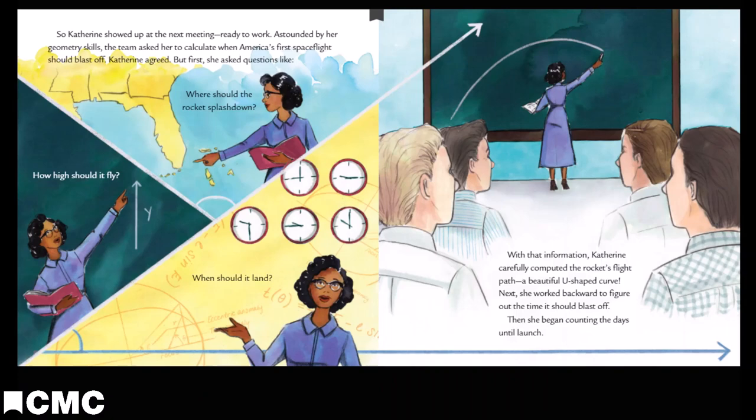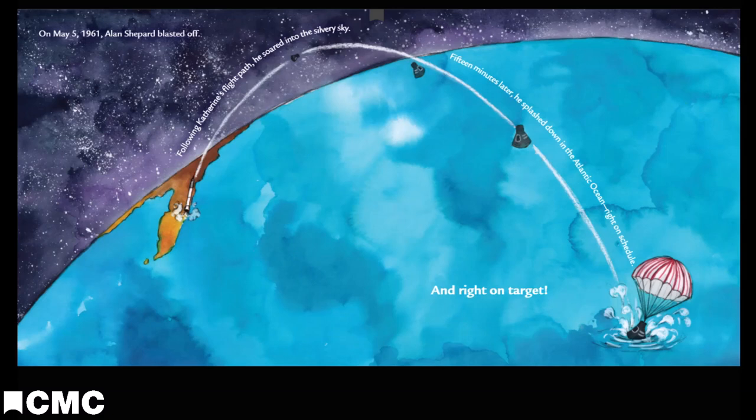On May 5th, 1961, Alan Shepard blasted off. Following Catherine's flight plan, he soared into the silvery sky. 15 minutes later, he splashed down in the Atlantic Ocean, right on schedule and right on target.